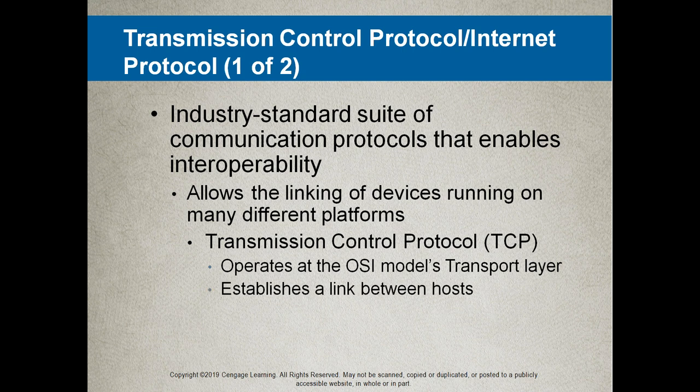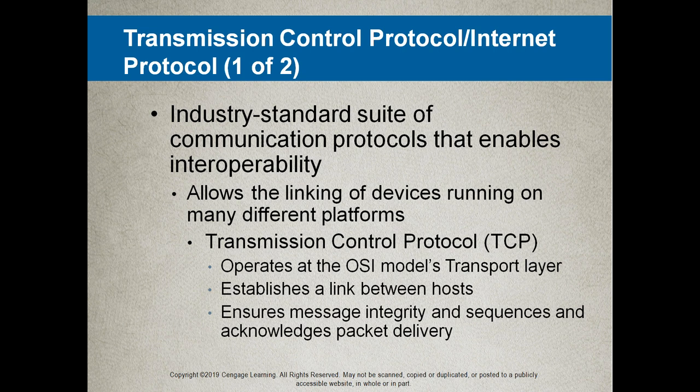TCP establishes a link between hosts and ensures message integrity, sequences and acknowledges packet delivery. For example, TCP would say: I'm going to send you ten packets — here's number one, two, four, five, seven, eight, nine — but there are packets missing. TCP will make sure it asks the sender to retransmit those missing packets. It also regulates data flow, telling a sender how fast to transmit data — to slow down or speed up.